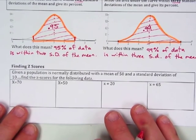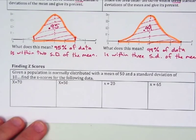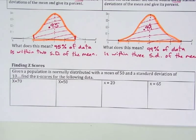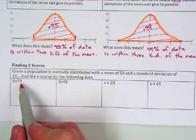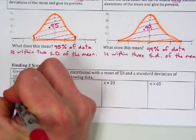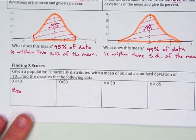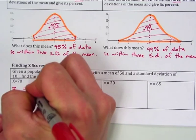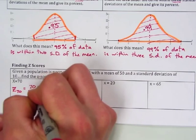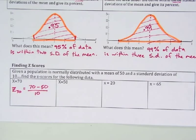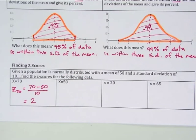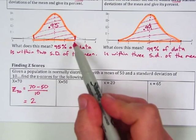In the next examples we find z-scores. Given a population is normally distributed with a mean of 50 and a standard deviation of 10, find the z-scores. For x = 70: since 70 is bigger than 50, the z-score must be positive. z(70) = (70 − 50) / 10 = 20 / 10 = 2. So 70 has a z-score of 2 and falls two standard deviations to the right on the normal distribution.